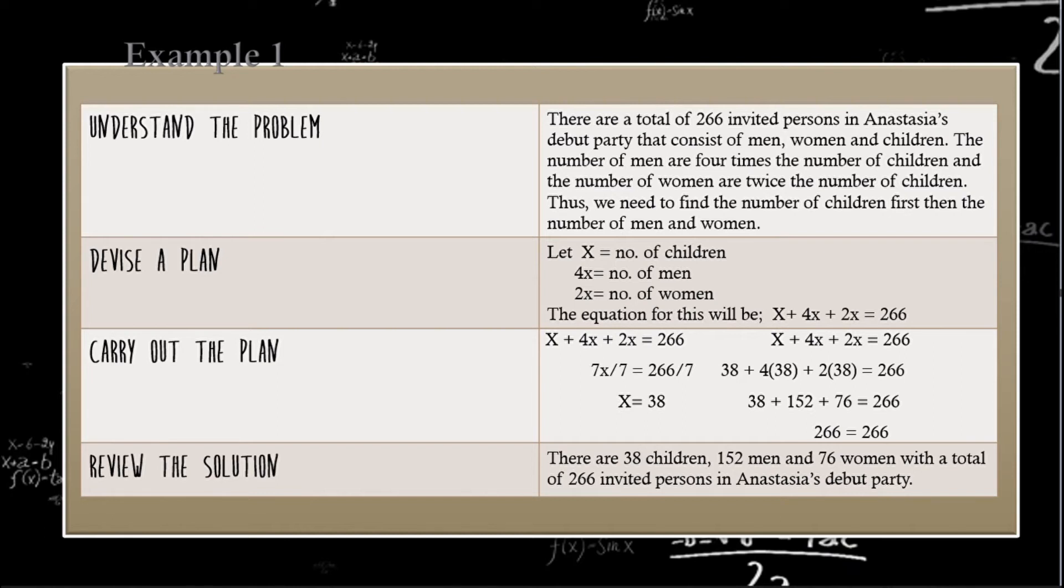And to carry out the plan, X + 4x + 2x = 266. I'm going to add the X + 4x + 2x. So it will be 7x. And then, I'm going to divide both sides by 7. The answer will be X = 38. And with answer, I'm going to substitute it in the equation. 38 + (4×38) + (2×38) = 266. 38 + 152 + 76 = 266. So 266 = 266. To review the solution, there are 38 children, 152 men, and 76 women with a total of 266 invited persons in Anastasia's debut party.